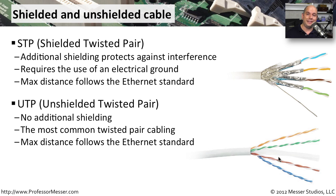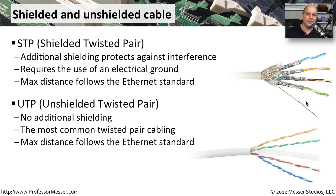There's no difference in Ethernet standard between STP and UTP — they both go exactly the same distance and use the same characteristics. The only difference is that shielded twisted pair has a shield and a ground wire to help minimize interference as it passes through a very electrically noisy environment.